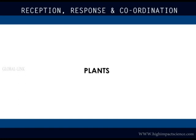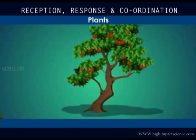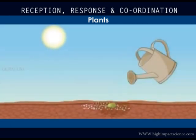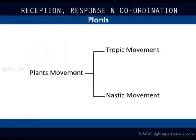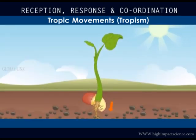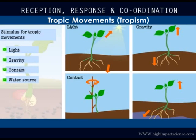Reception, response, and coordination in plants. Unlike animals, plants do not move from one place to another. However, they show growth movements in response to some stimuli like sunlight, water, soil, and so on. There are two major types of movements in plants: tropic and nastic movements. Plants' roots grow downwards while shoots grow upwards. These growth movements in plants are based on the direction of external agents or stimuli. Common external stimuli include light, gravity, contact, or water source.